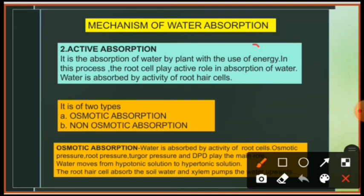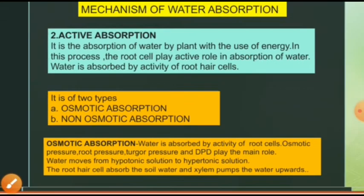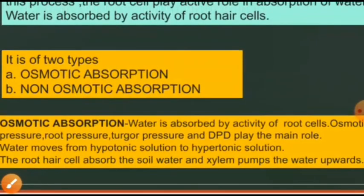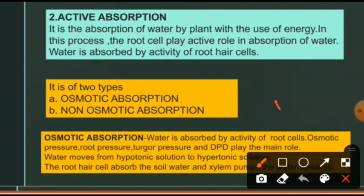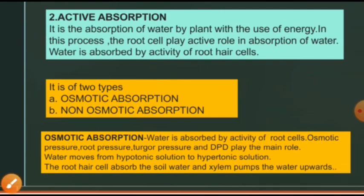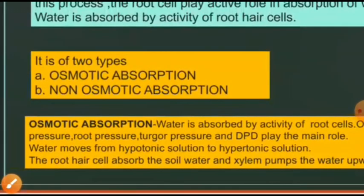Second — active absorption. In active absorption, water is absorbed with the use of energy; it is an active process. Root cells play a very important role in the absorption of water. There are two types of active absorption: one is osmotic active absorption and second is non-osmotic active absorption. In osmotic absorption, water is absorbed by the activity of root cells, and osmotic pressure, turgor pressure, and DPD play a very important role. Root hairs absorb soil water, and xylem pumps the water upward.